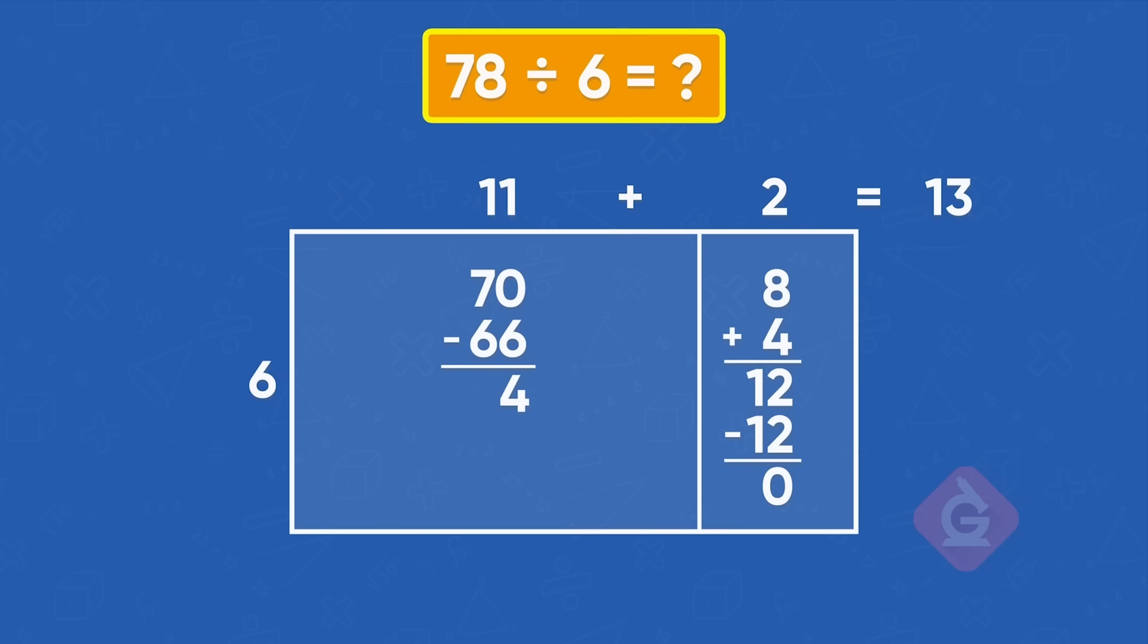Right. So this means that 78 divided by 6 equals 13. So we have 13 of each type of fossil. Exactly.